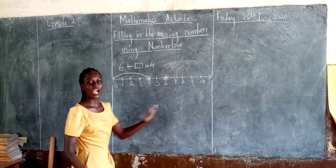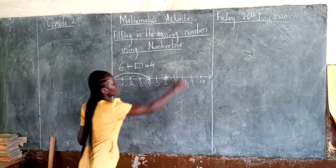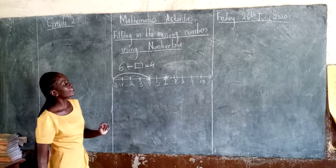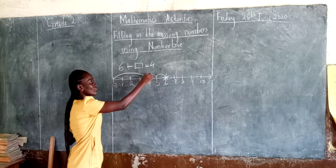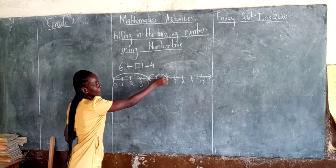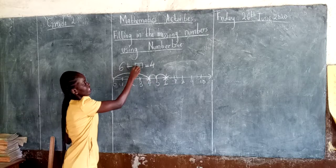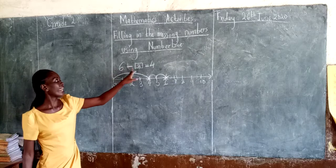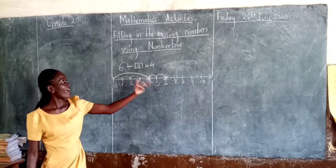Yes, we are counting backward. We count from 6 to 4 to find the missing number. Going backward: one, two. We've skipped two steps going backward. So our answer is 2. Six take away 2, we get 4. This is our answer.